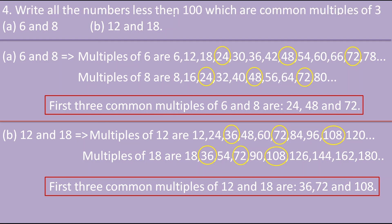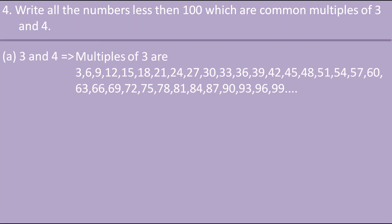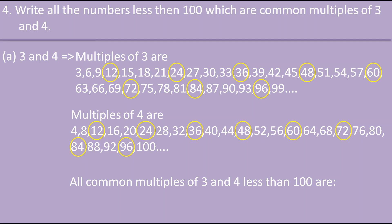The fourth question asks us to write all numbers less than 100 which are common multiples of 3 and 4. We find multiples of 3 up to 99 and multiples of 4 up to 100, then compare. The common multiples are 12, 24, 36, 48, 60, 72, 84 and 96. These are all the common multiples of 3 and 4 that are less than 100.